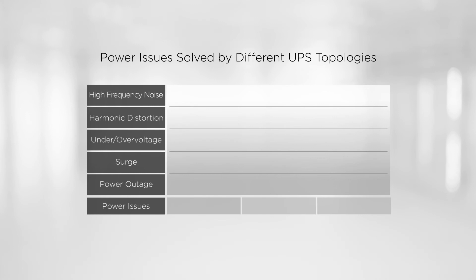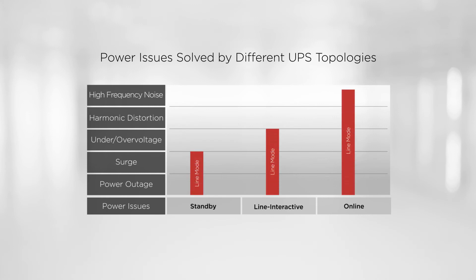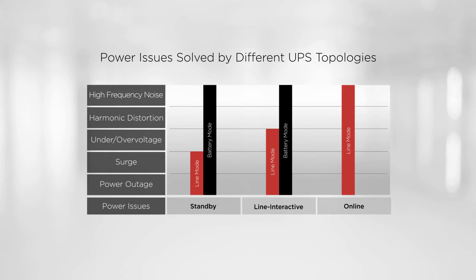When the UPS is operating in line mode, each type of UPS can provide different levels of power protection. However, while the UPS is in battery mode, it can protect connected equipment against all the power issues.